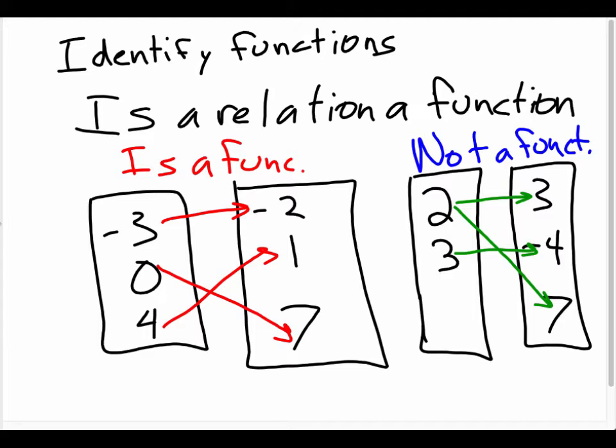Based on the mappings, one of those is a function and one of them is not a function. Can somebody tell me why the second one is not a function? Christian? It's because 2 goes to 2 different numbers. X corresponds to 2 y values.